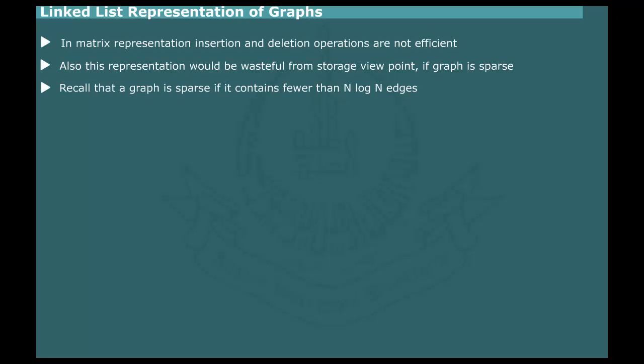Strictly speaking, we say that a graph is sparse if it contains fewer than n log n edges, where n is the number of vertices.